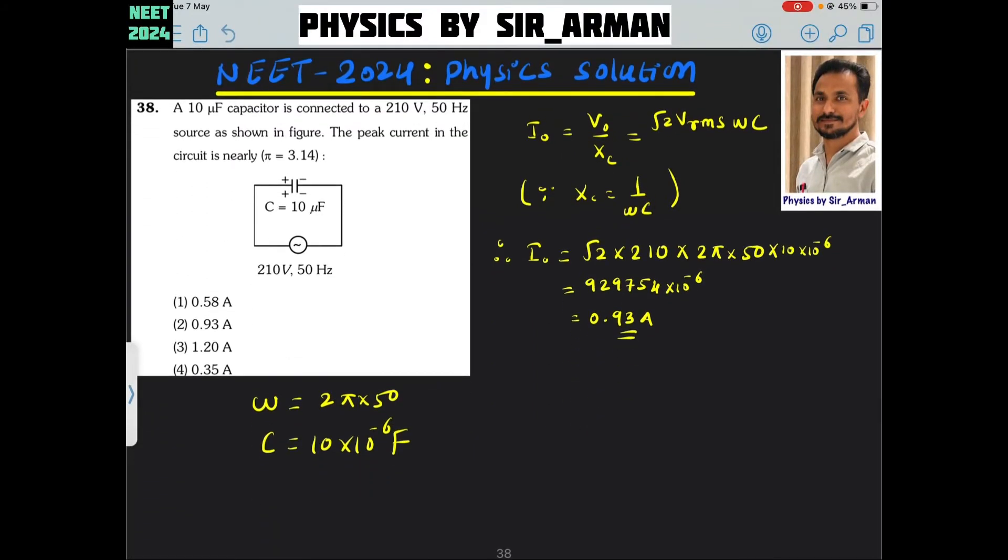Question number 38. A 10 microfarad capacitor is connected to a 210 volt, 50 hertz source. Find the peak current.